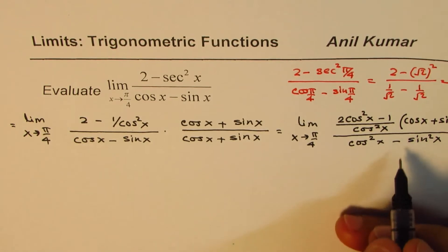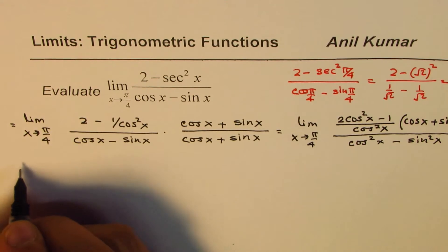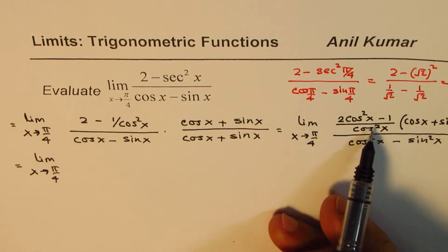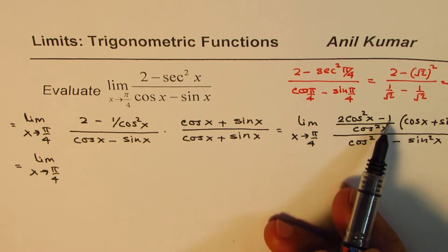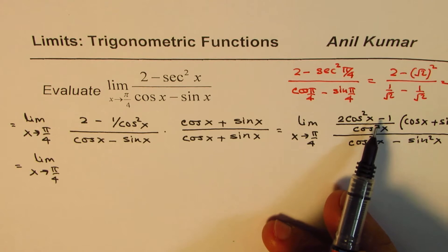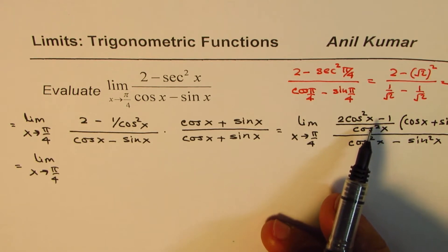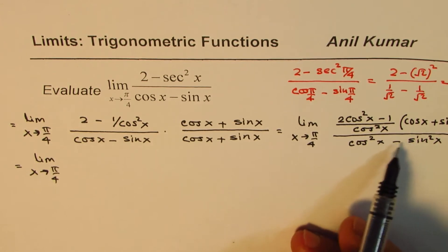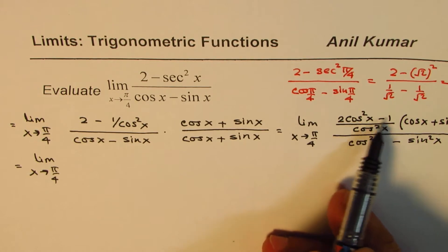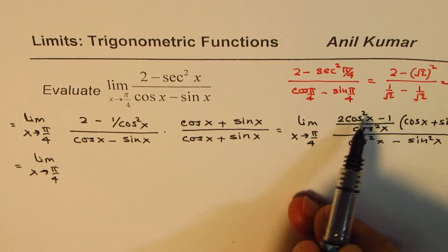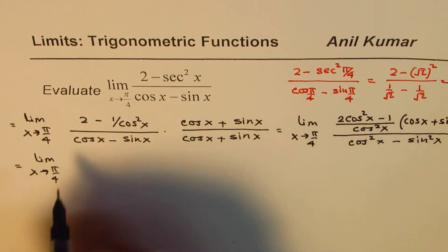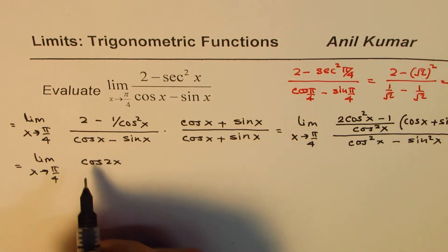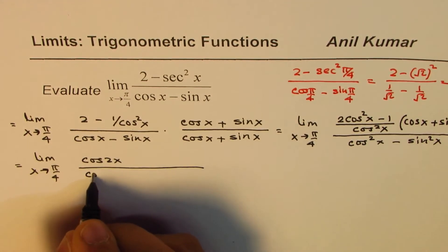You may need to review some trigonometric identities to solve this. We have the limit as x approaches pi by 4. We write 2 cos squared x minus 1 in the numerator. Now, 2 cos squared x minus 1 can be written as cos 2x. So that part becomes cos 2x divided by cos squared x, and everything is multiplied by cos x plus sin x.